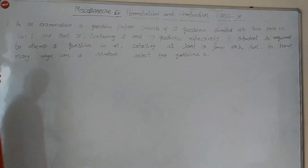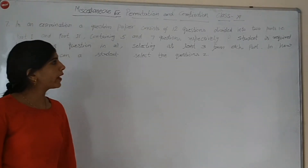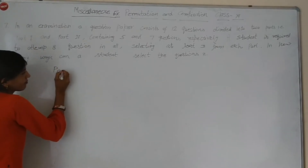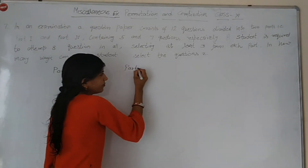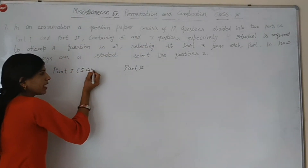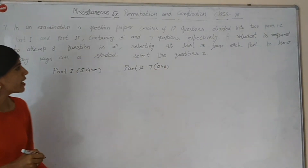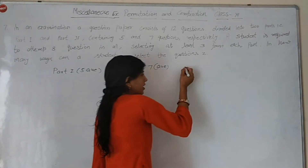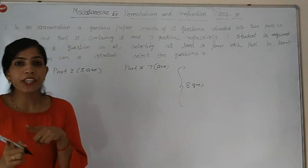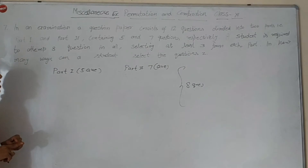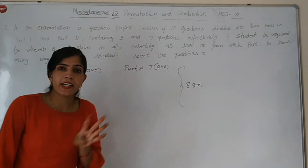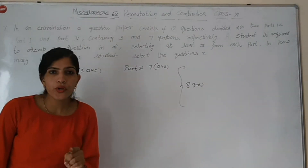Question 7: In an examination, a question paper consists of 12 questions divided into two parts — Part 1st and Part 2nd — containing 5 and 7 questions respectively. A student is required to attempt 8 questions in total, with at least 3 from each part. In how many ways can a student select the questions?